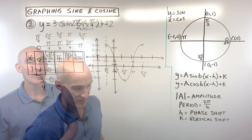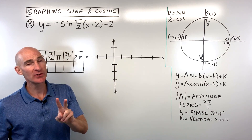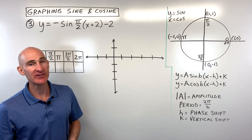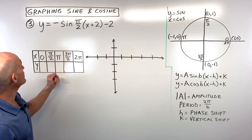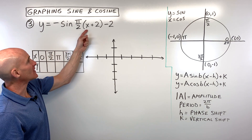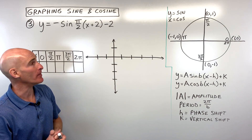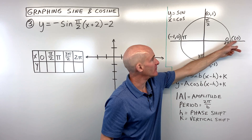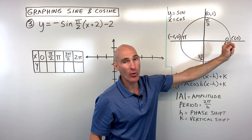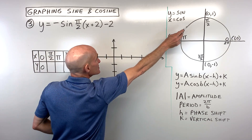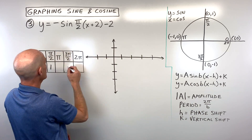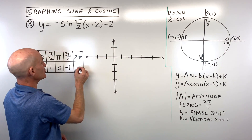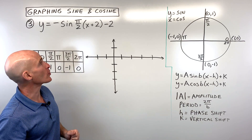For example number three — see if you can pause and try it on your own. y equals negative·sin(π/2·(x + 2)) - 2. We're dealing with the sine graph, so we look at y-coordinates from the unit circle: sine of 0 = 0, sine of π/2 = 1, sine of π = 0, sine of 3π/2 = -1, and sine of 2π = 0. These are our parent graph basic coordinates.